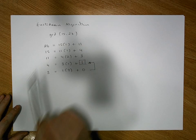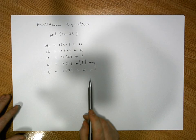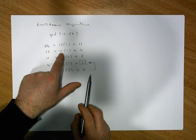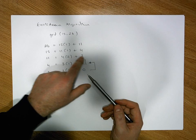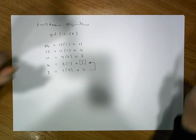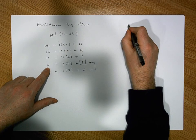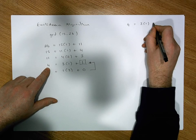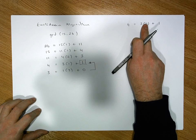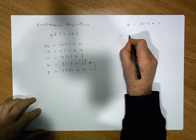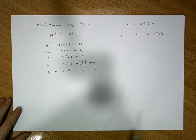Now to find the multiplicative inverse of 15 modulo 26, we reverse this process by back-substituting. Starting from the second-to-last line: 4 equals 3 times 1 plus 1, which we rewrite as 1 equals 4 minus 3 times 1. We then go to the line above, where 3 equals 11 minus 4 times 2, and substitute that expression for 3.